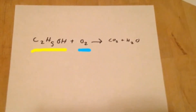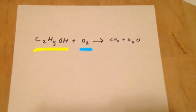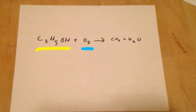Here are your two reactants. The first, underlined in yellow, is your 50% water, 50% alcohol solution. The second, O2, is the air needed to spark a combustion reaction.